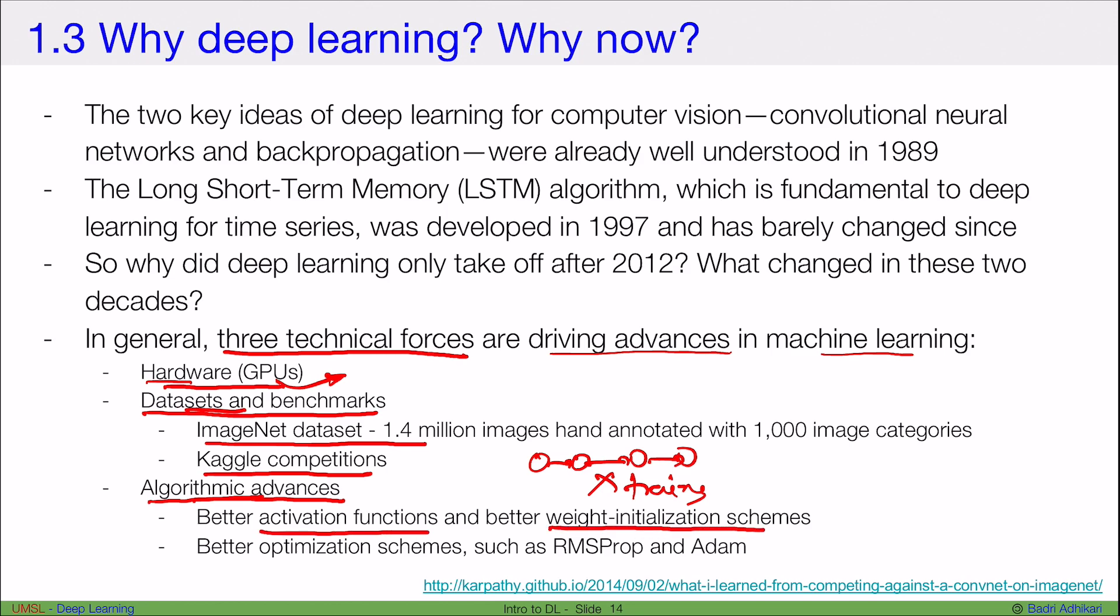But now we have come up with many algorithmic advances such that we can weight initialize better, we have better activation functions, we understand them more, we have better optimization schemes, such as adaptive learning rates Adam and RMSProp, which enable us to design really deep neural networks, such that we can train a very deep neural network without any problems. So these three advances, hardware, datasets and benchmarks and algorithmic advances are the reasons why deep learning took up only very recently.